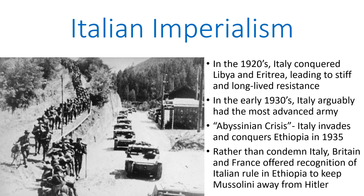Mussolini was the first to challenge the League of Nations' legitimacy, and he did so through his actions in North Africa. During the 1920s, Italy conquered Libya and Eritrea, but quickly found that overrunning these areas was far easier than governing them, as they faced a long-lived and stiff resistance in both countries. By the early 1930s, since Italy had combat experience and had been spending on its military, it was widely believed to have the most advanced army in the world. However, Italy would squander their military advantages by pulling all the resources into Ethiopia.